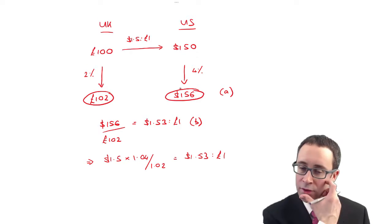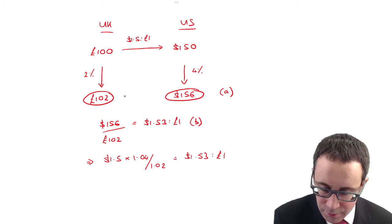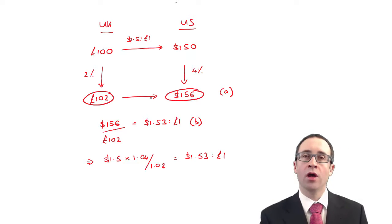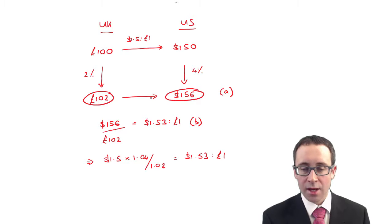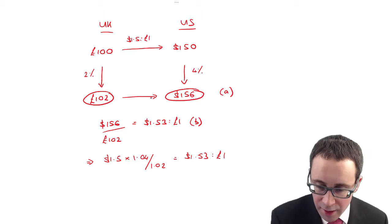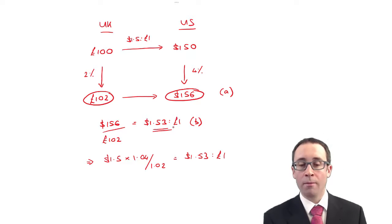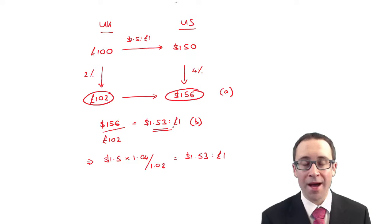For part B, you divide the dollars by the pounds to work out the dollar-to-pound exchange rate. Working that through, you end up with $1.53 to the pound.